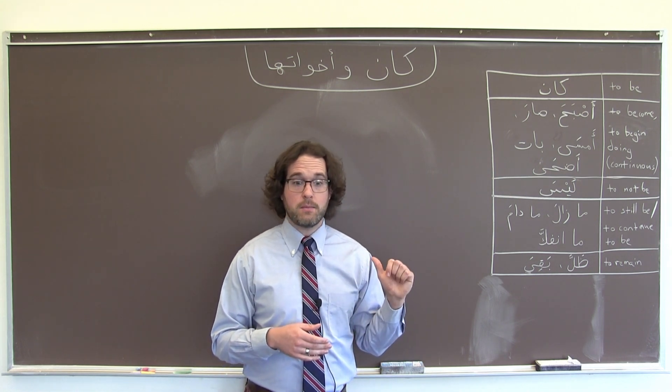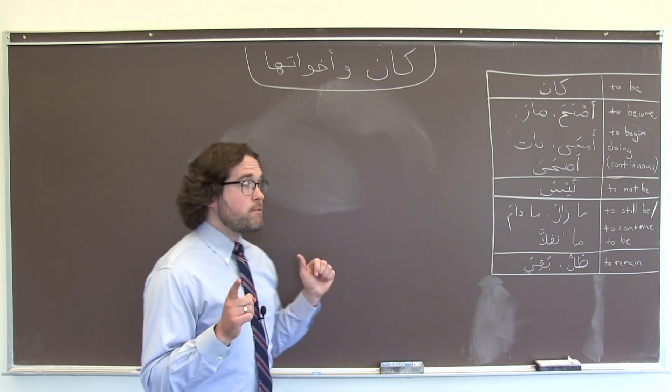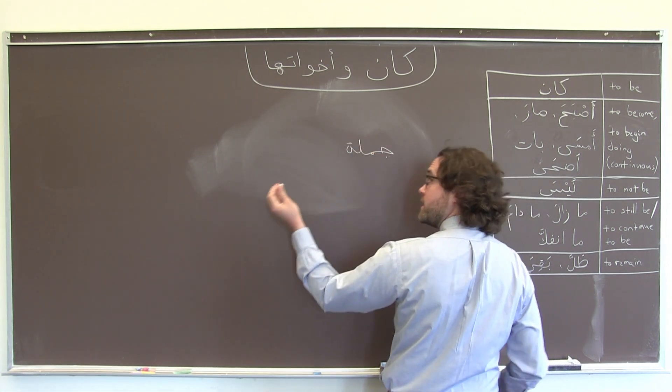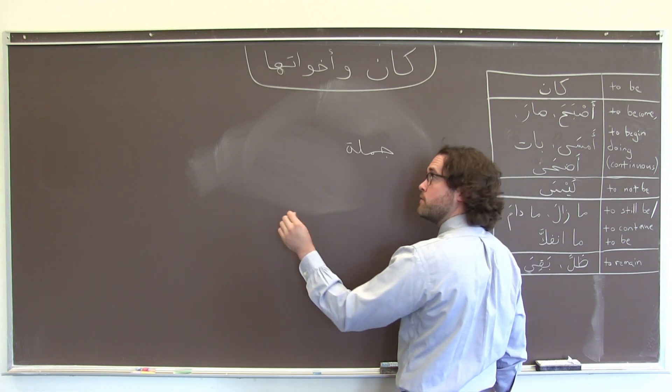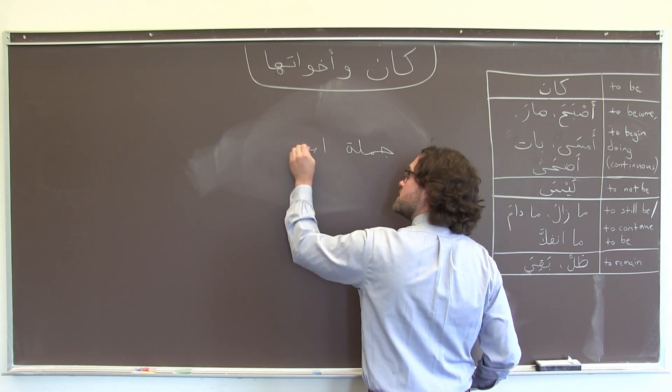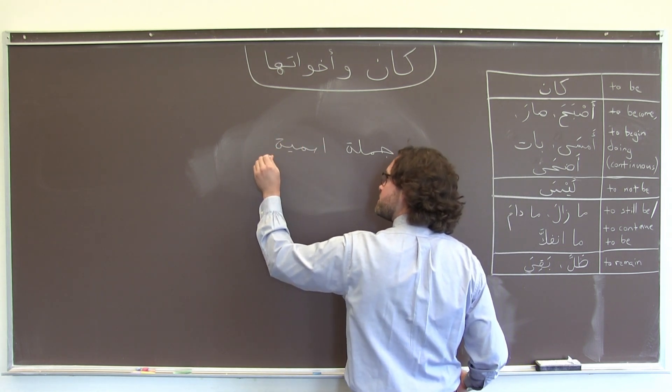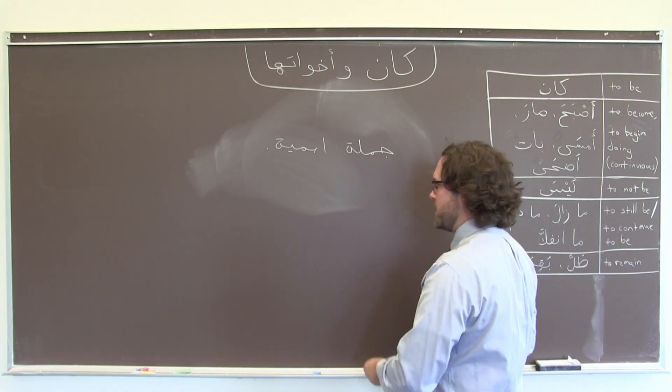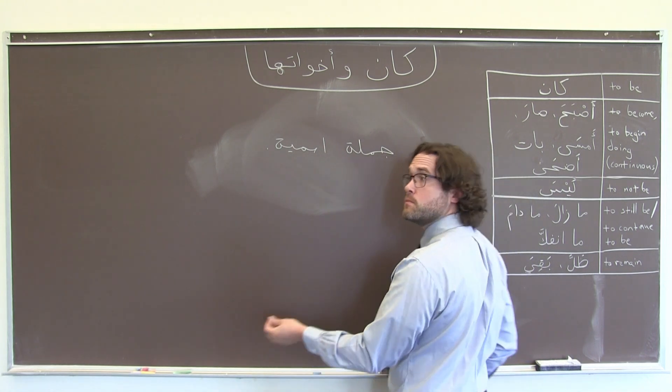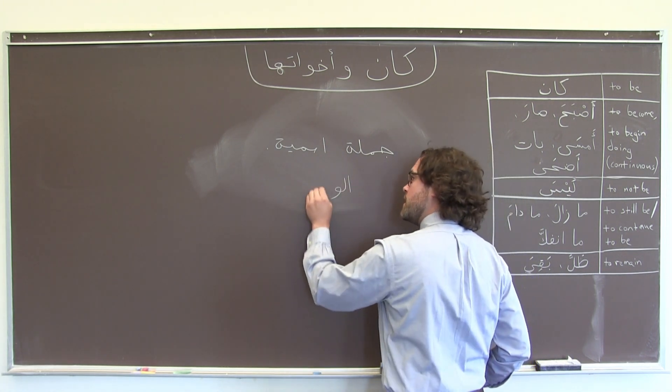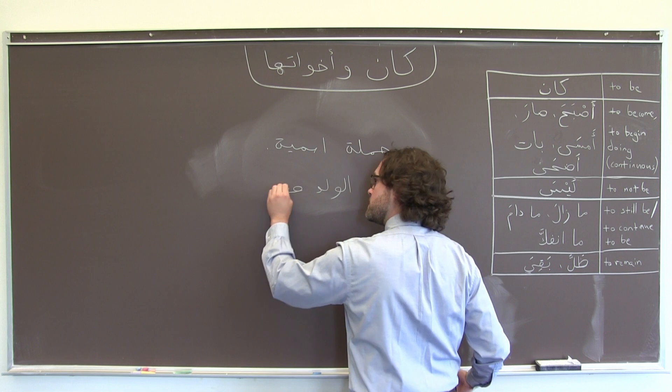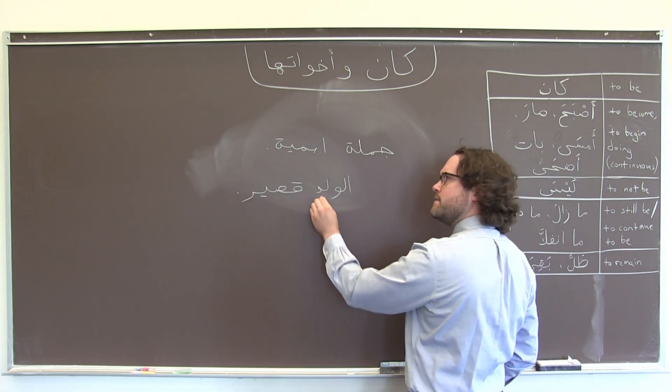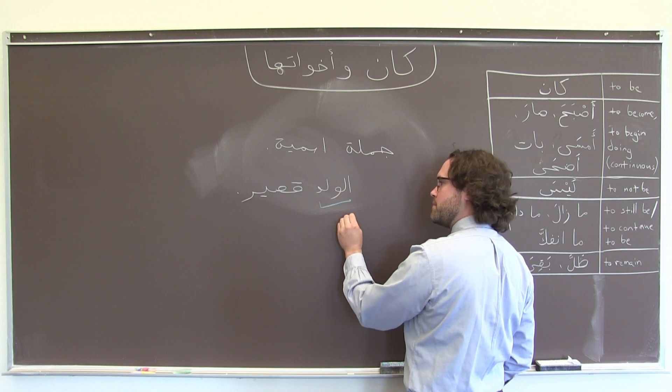So let's take a look at some examples. First, as you know, in a جملة إسمية, a regular nominative, nonverbal sentence, we use two words to talk about the subject and the predicate. If I said the boy is short. الولد قصير. الولد is my subject, my beginning, my مبتدأ.